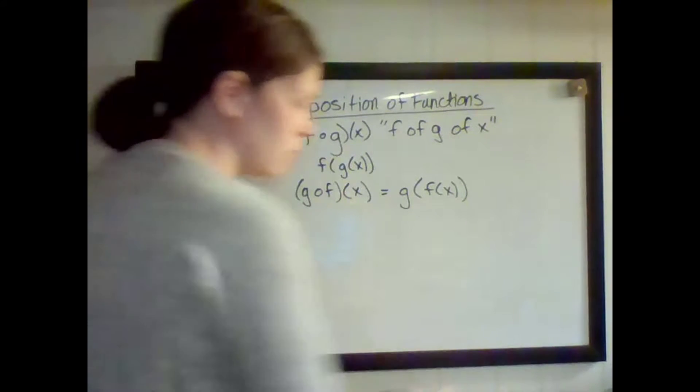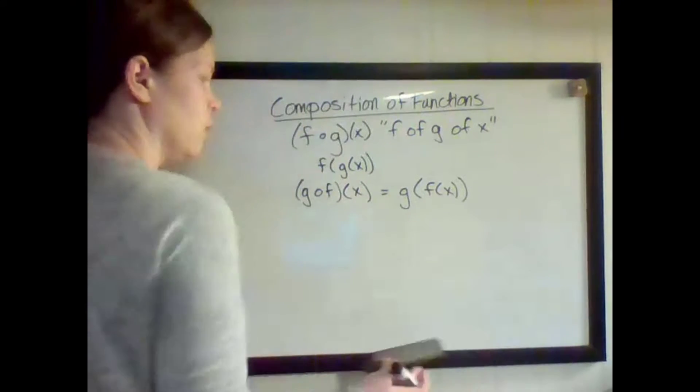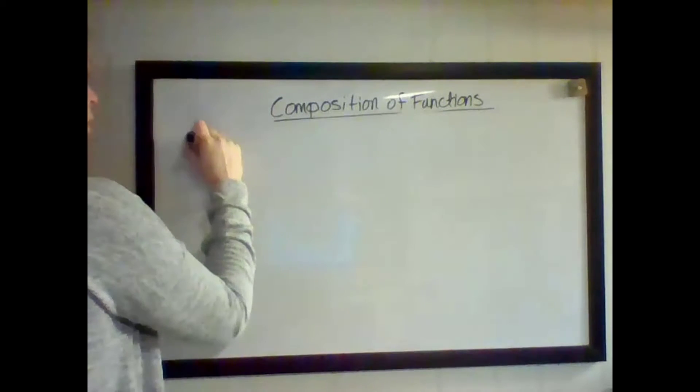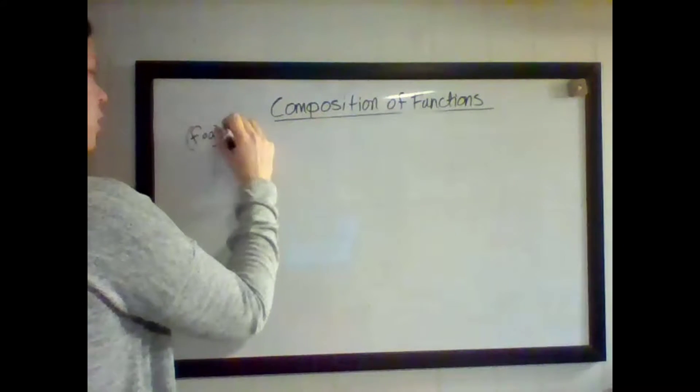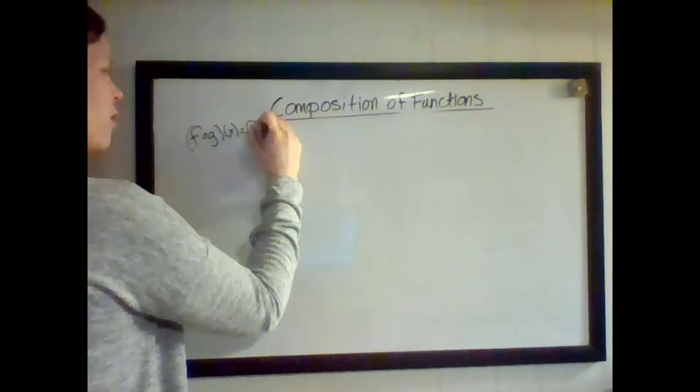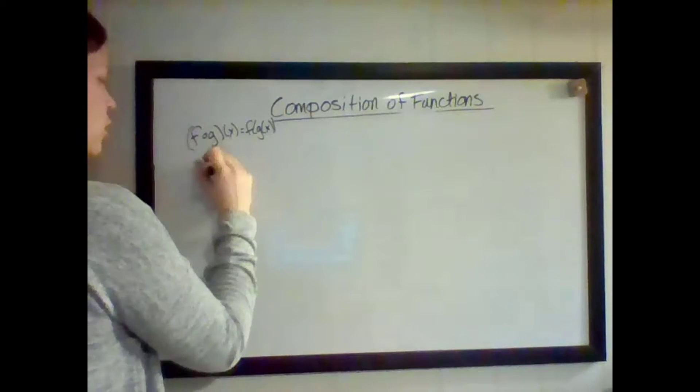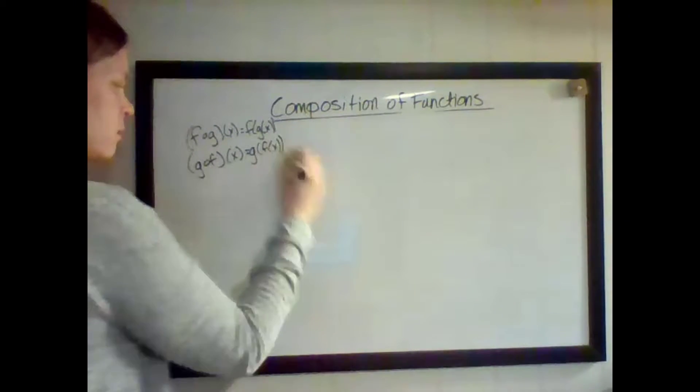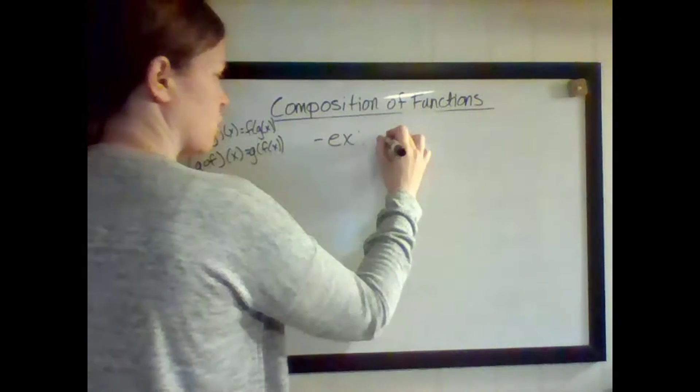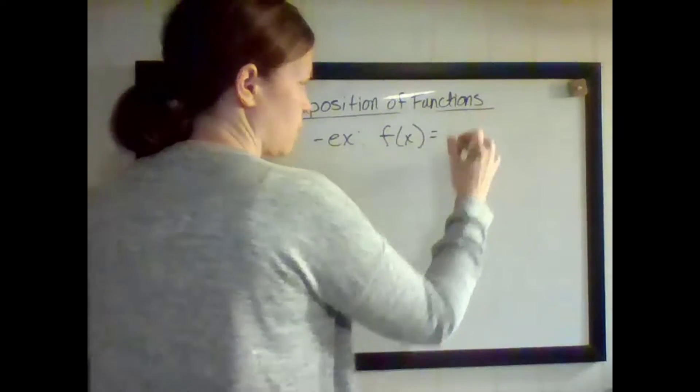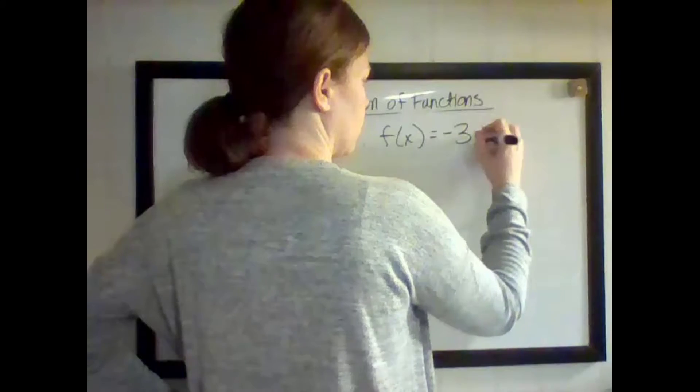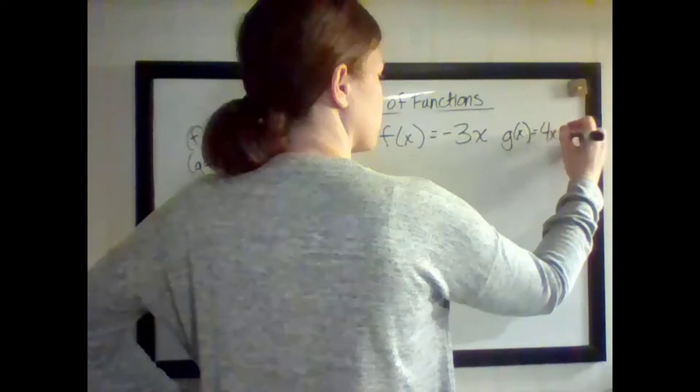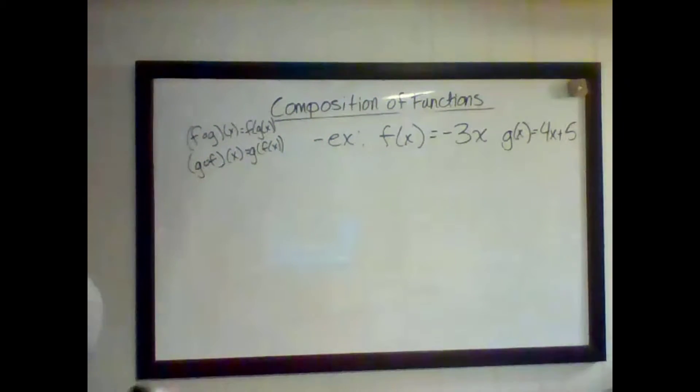So let's do, I'm going to rewrite that smaller up on the side for a minute. You should still have it in your notes. But F of G is F of G of X. G of F. So let's say F of X is negative 3X. And G of X is 4X plus 5. So I've got two functions.